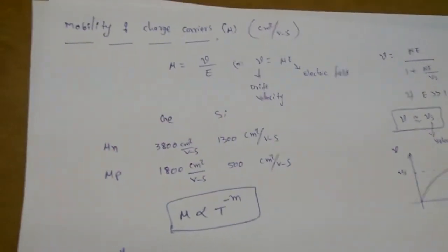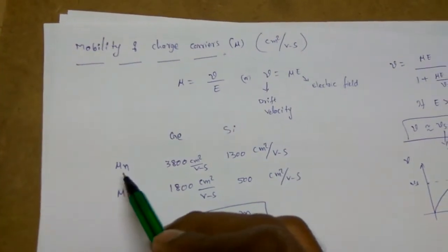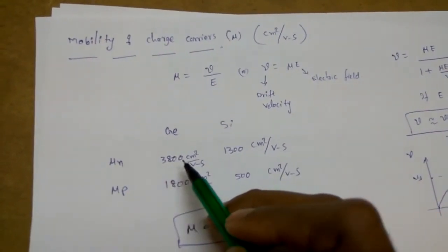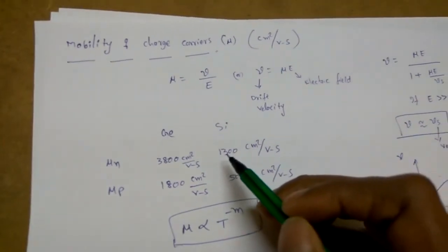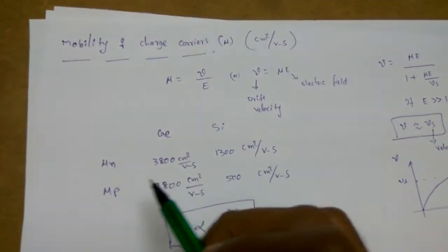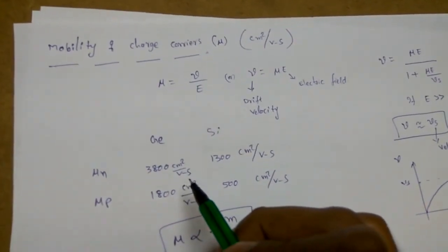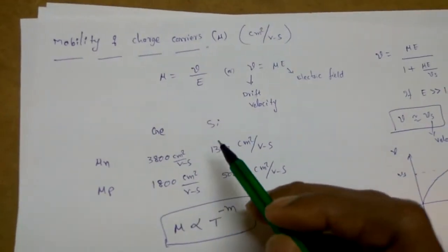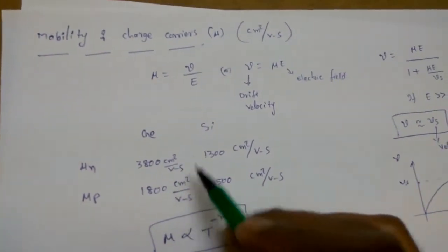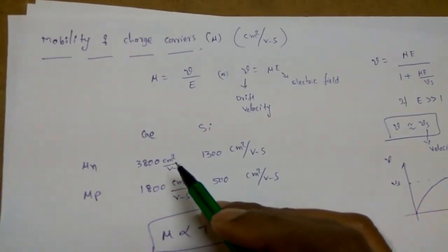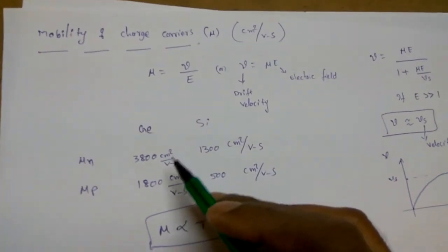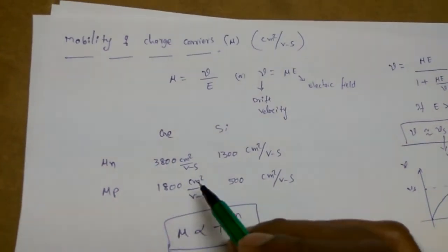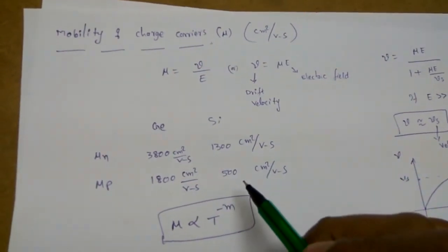Standard mobility values: for germanium, electron mobility mu_n = 3800 cm²/V·s and hole mobility mu_p = 1800 cm²/V·s. For silicon, mu_n = 1300 cm²/V·s and mu_p = 500 cm²/V·s. These units must be remembered — sometimes the exam asks for values in m²/V·s, so conversion is needed. Some books use slightly different values like 3900, 1900, 1350, 480.